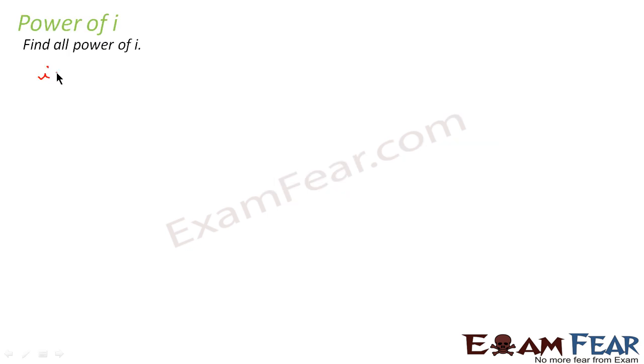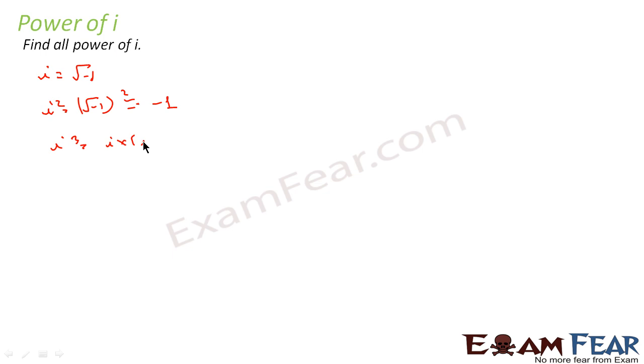Let's understand the power of i. We know i is the root of minus 1. So i squared is equal to root of minus 1, whole squared, and that becomes minus 1. When you say i cubed, that is nothing but i into i squared, and i squared is equal to minus 1, so it becomes minus i.